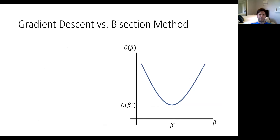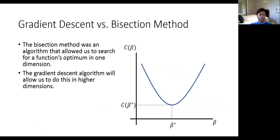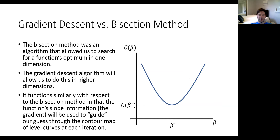The bisection method was a simpler version of gradient descent, applying in one-dimensional choice variable space. The gradient descent algorithm allows us to do the same thing in higher dimensions with a slightly different update rule, but it functions similarly to bisection in that cost function slope information is still the key thing used to guide the update rule — guiding us through that contour map of level curves at every iteration.